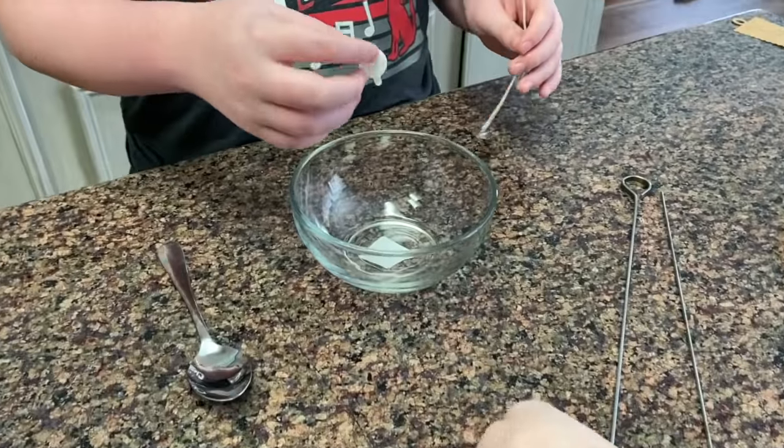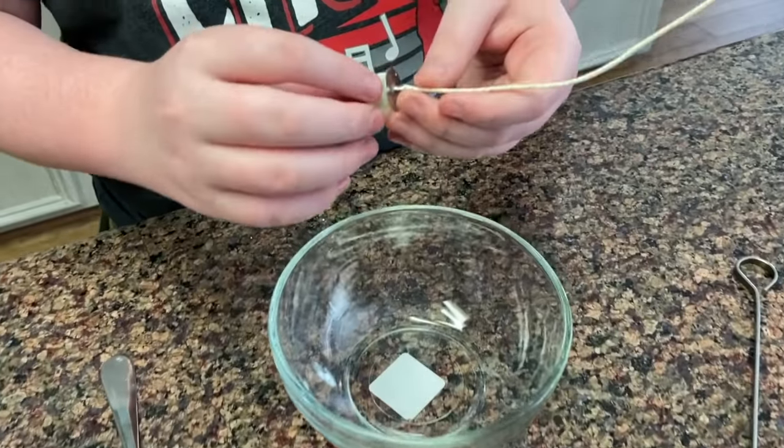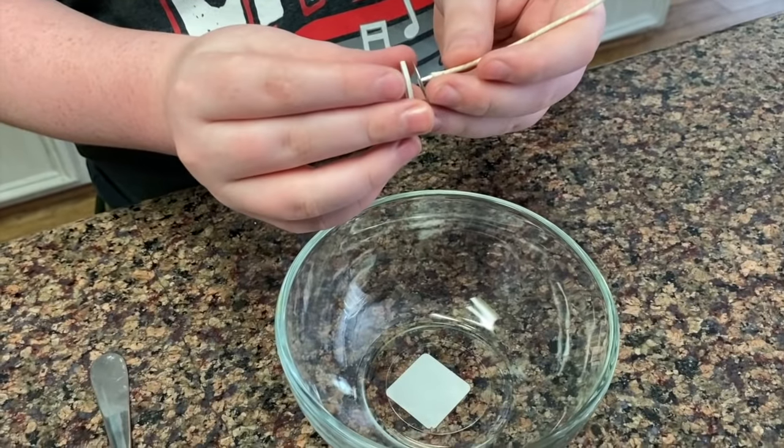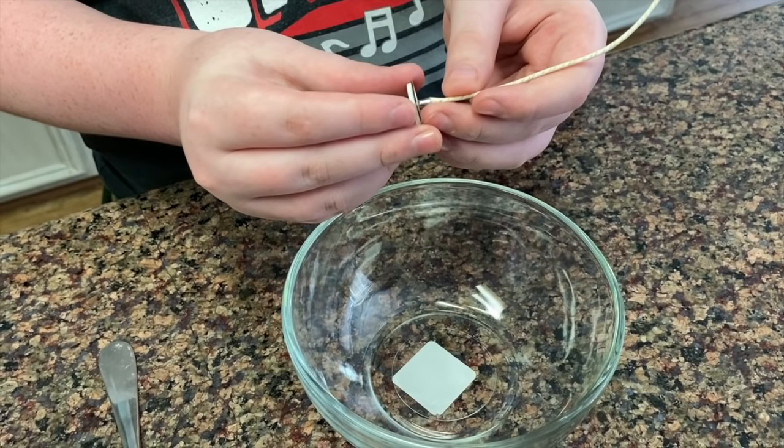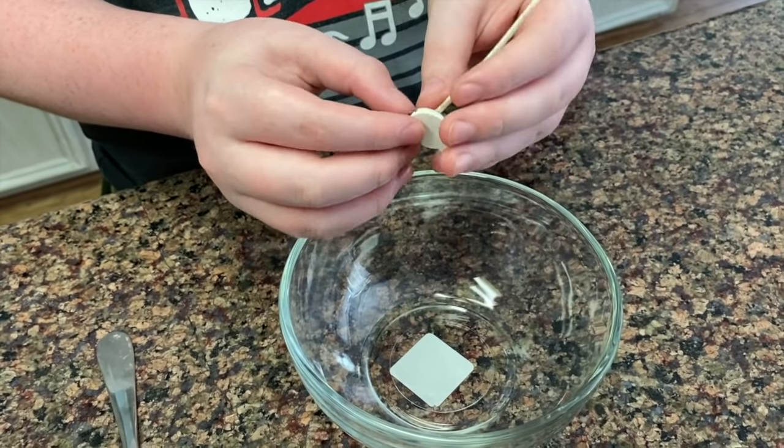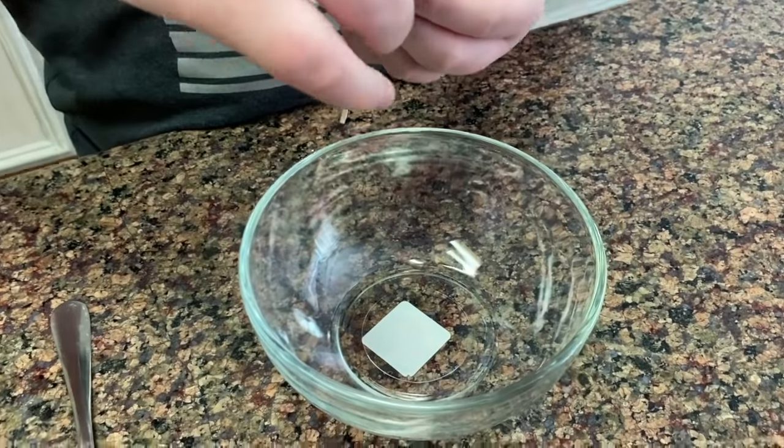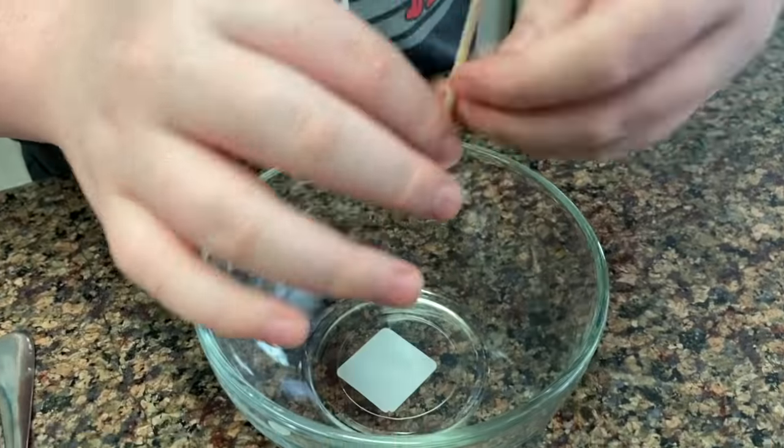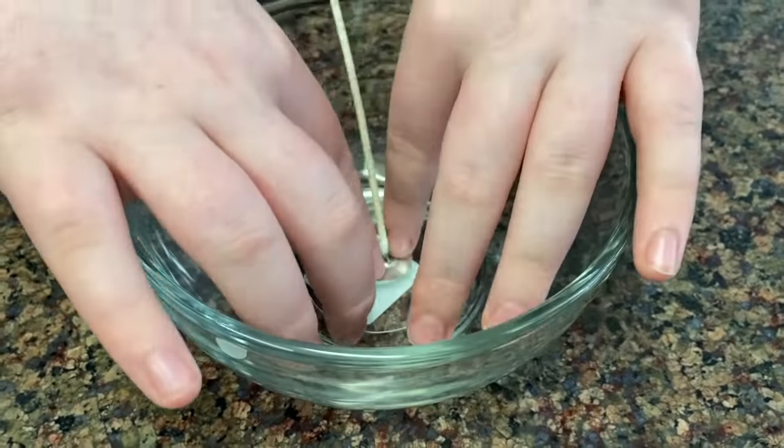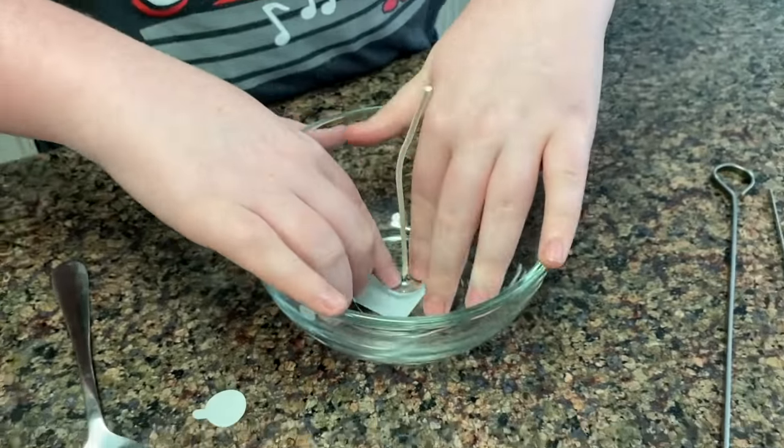While the wax is melting, go ahead and prep those bowls by taking your wick and placing the sticker on the bottom of your wick and then placing the sticker on the center of the bowl. Make sure that you wipe out your bowls with some rubbing alcohol to make sure they're nice and clean. At this point my son kind of took over my candle, so him and my daughter were both working on this project and they really had a lot of fun.